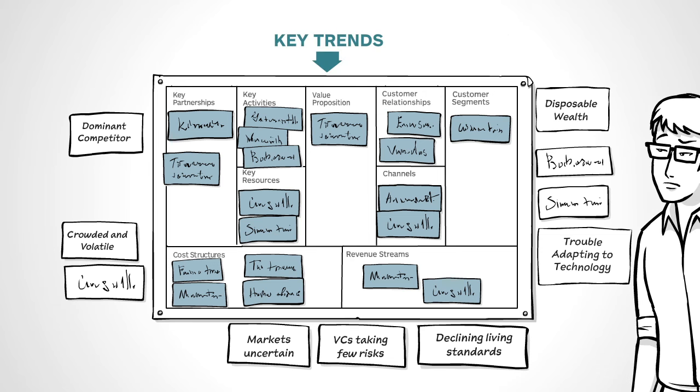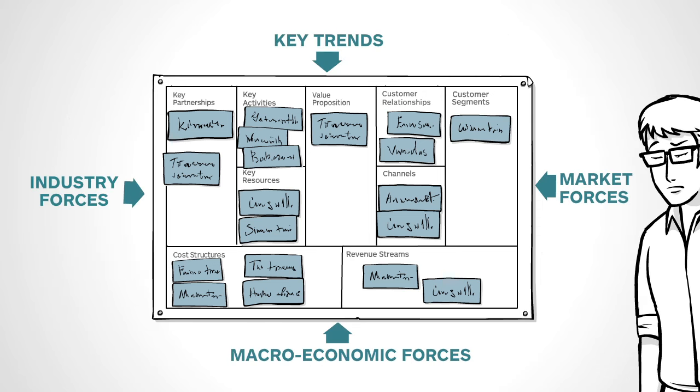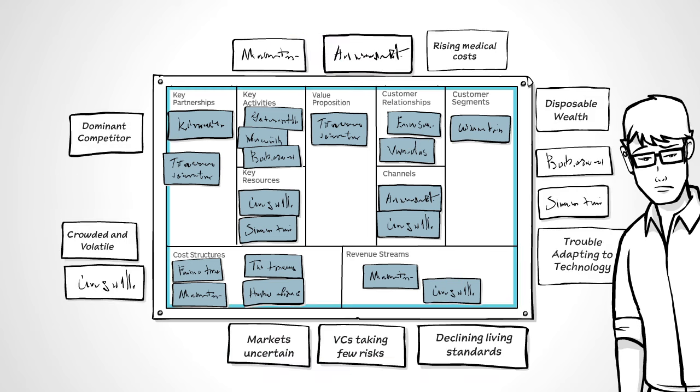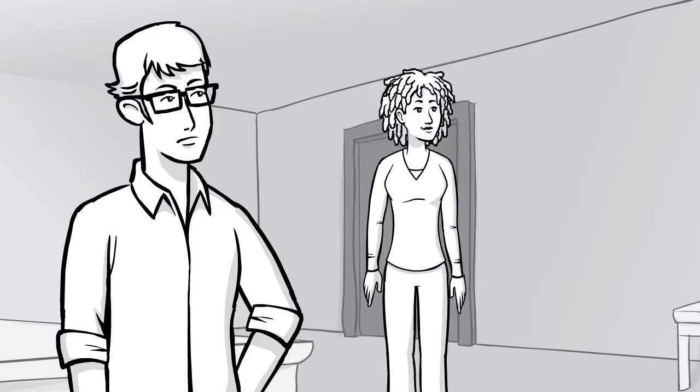Now you've mapped your environment, full of threats, opportunities and constraints. What do you do? Use the map, of course, to make your business model more responsive.